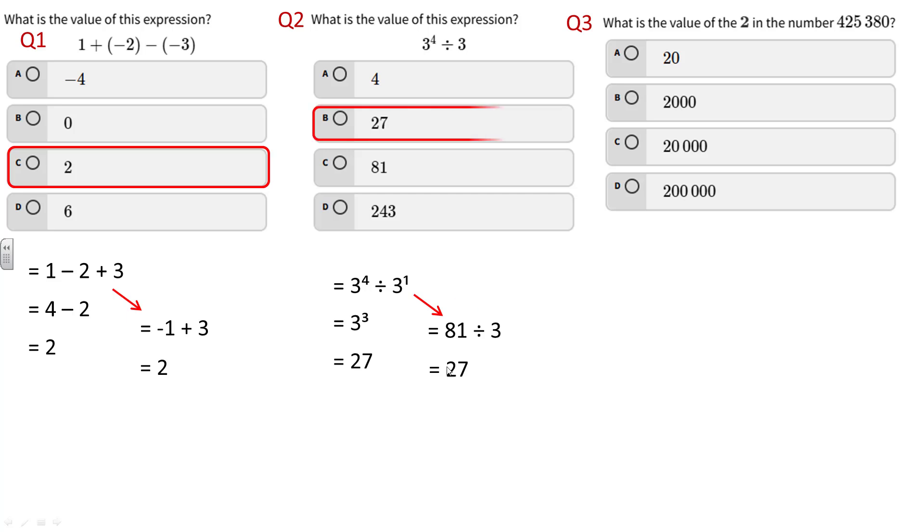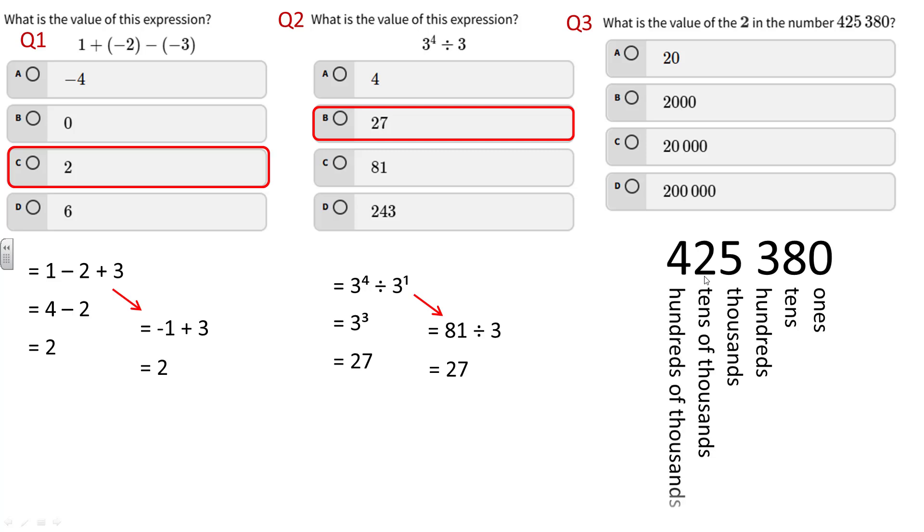Third question: what's the value of the 2 in this number? We write out 425,380. The 0 is in the ones place, the 8 is the tens, 3 is the hundreds, 5 is the thousands, and this is the tens of thousands. Two tens of thousands would be twenty thousand, so the value of that digit is twenty thousand.